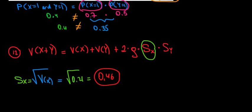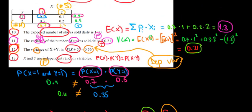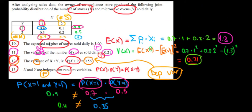We can also find the standard deviation of Y pretty fast. We find the variance of Y first, and then the standard deviation of Y is going to be the square root of it. The variance of Y is equal to the expected value of Y squared minus the expected value of Y, to the power of 2.